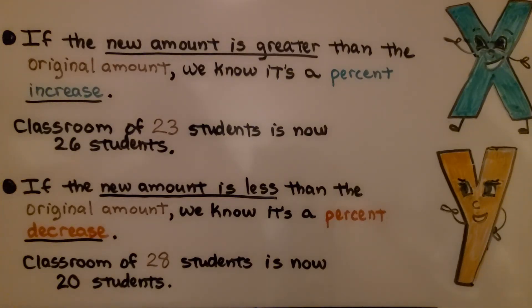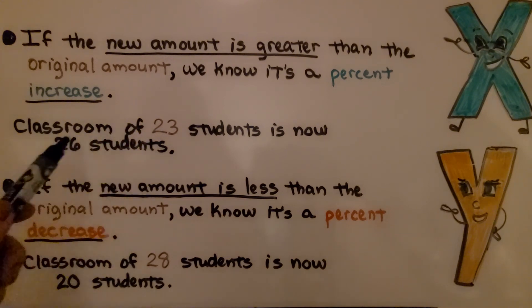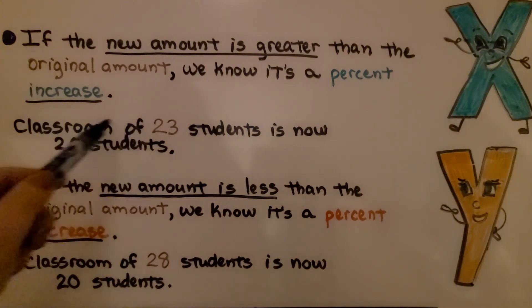If the new amount is greater than the original amount, we know it's a percent increase. If there was a classroom of 23 students is now 26 students, that's an increase.